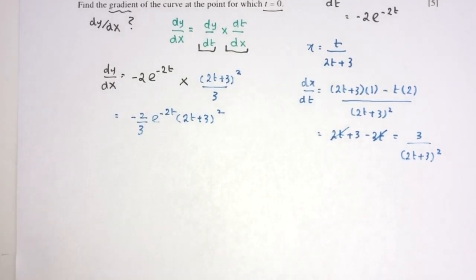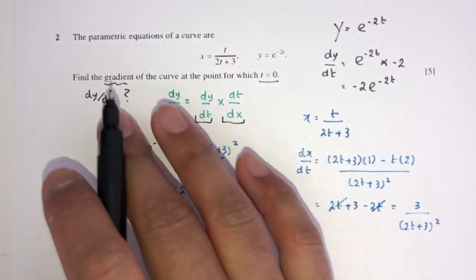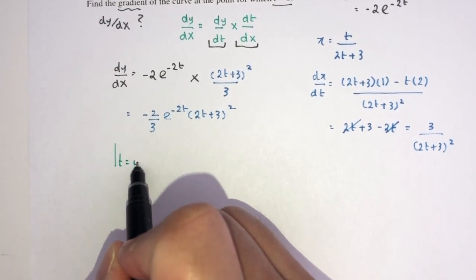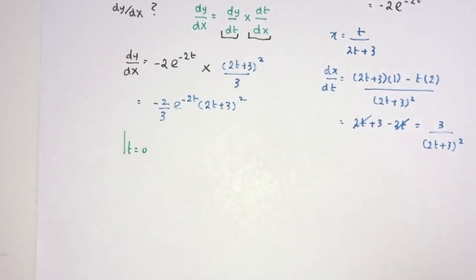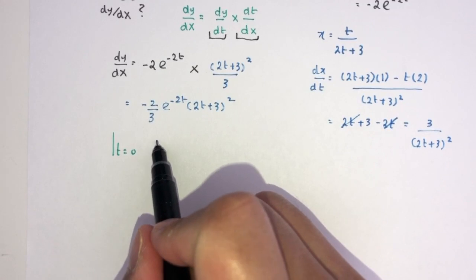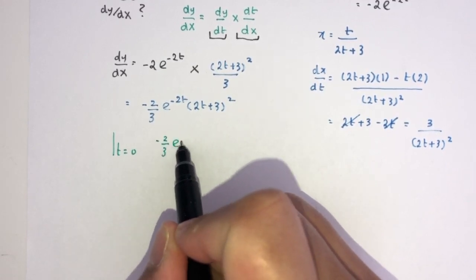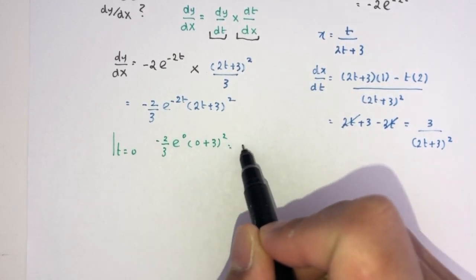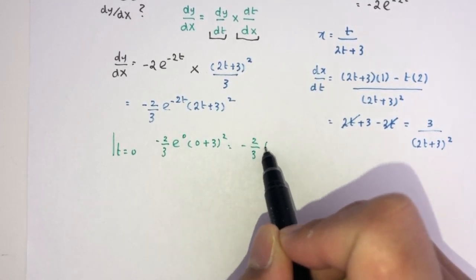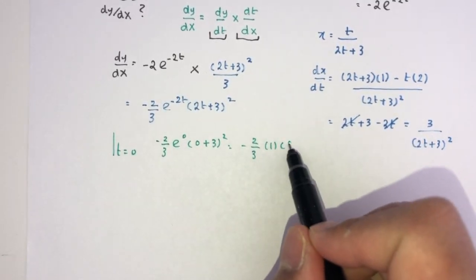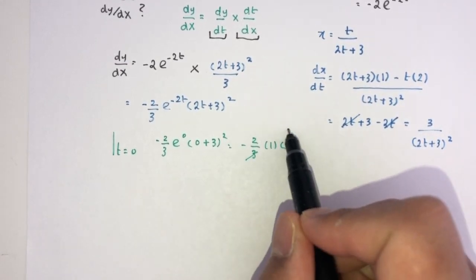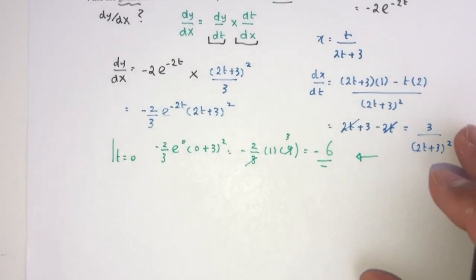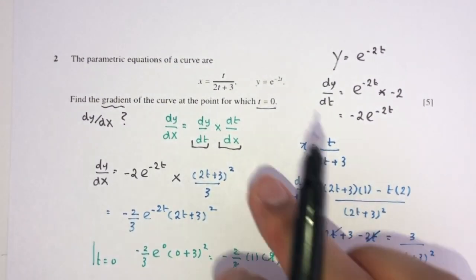Next we find the gradient when t = 0. Substituting t = 0: e^0 = 1, (2(0) + 3)² = 9. So dy/dx = −2 × 9/3 = −2 × 3 = −6. The gradient for question number 2 is −6.